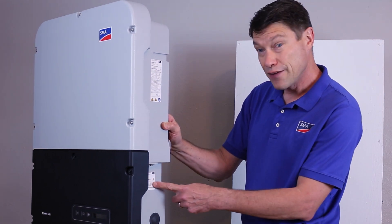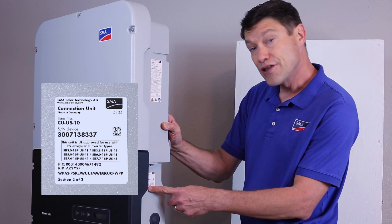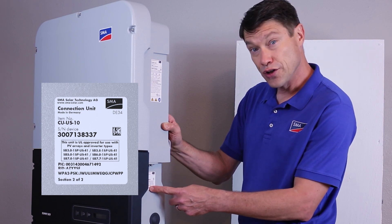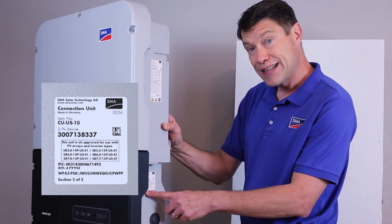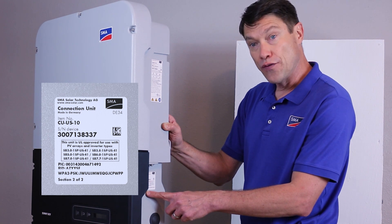you'll notice that there's a sticker with the main device serial number, as well as the PIC and RID codes for registration on Sunny Portal, and the final 16-digit code for the inverter's self-hosted Wi-Fi.